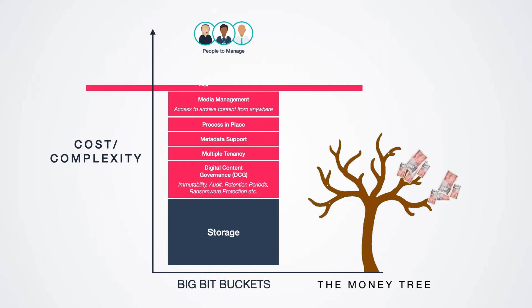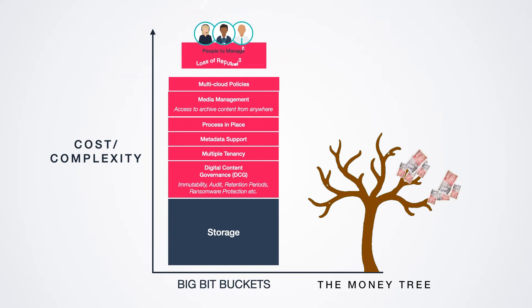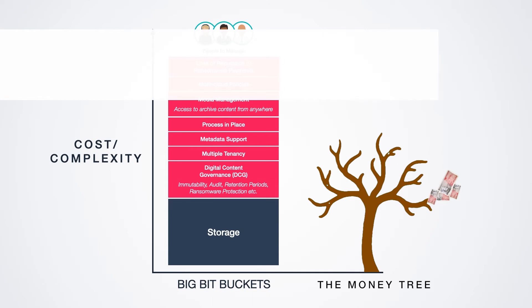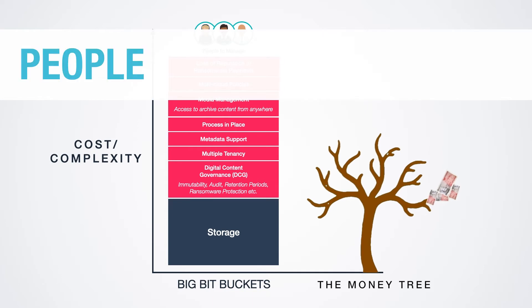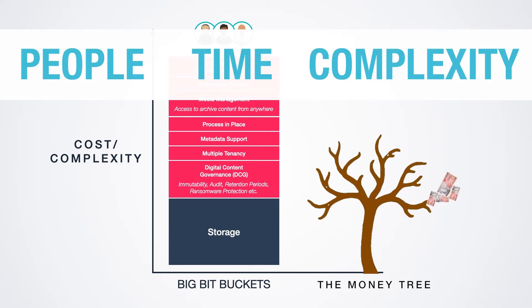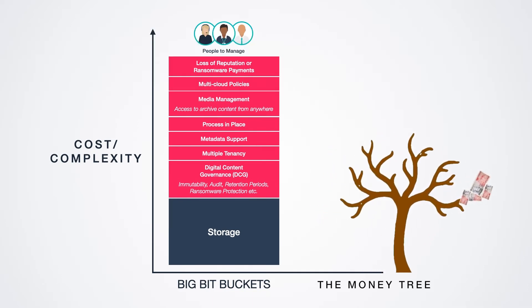If you want to automate multi-client protection, you guessed it — extra. And by extra, we mean people, time, and complexity, as well as cost.